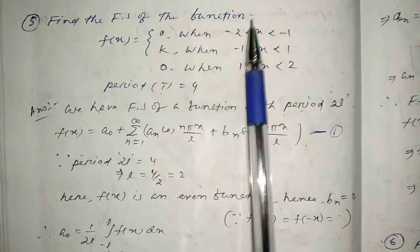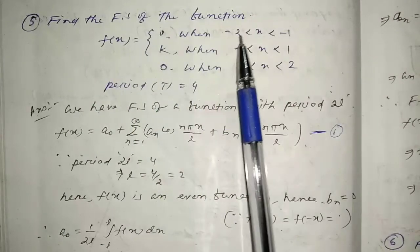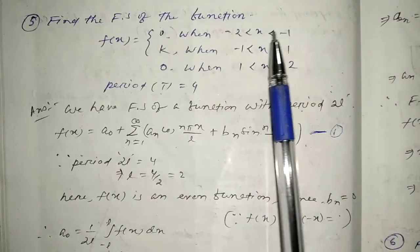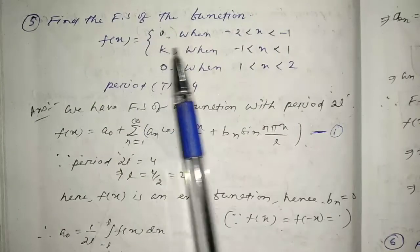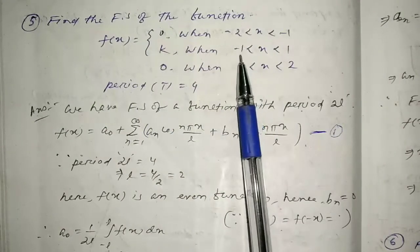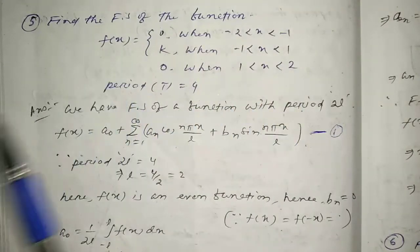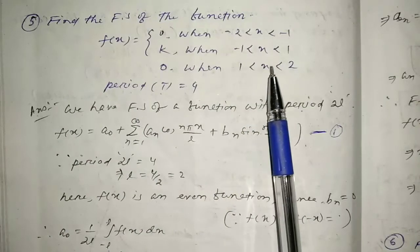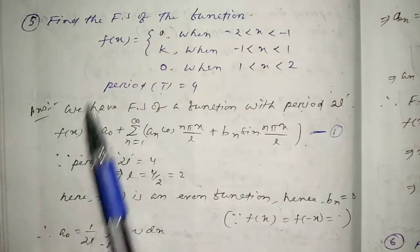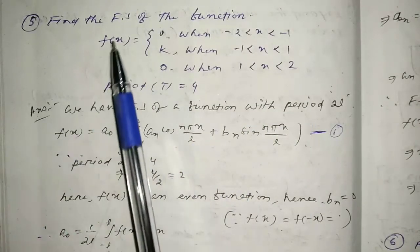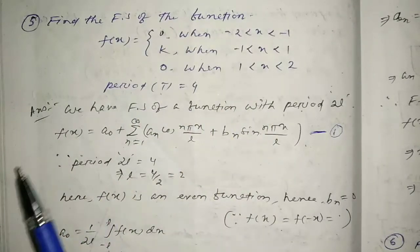Find the Fourier series of the function: f(x) = 0 when -2 < x < -1, f(x) = k when -1 < x < 1, and f(x) = 0 when 1 < x < 2. The period is 4. So f(x) is defined in three different conditions.